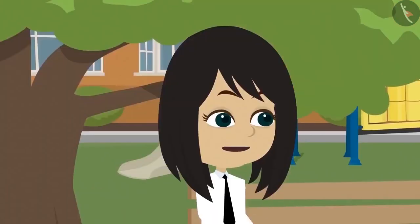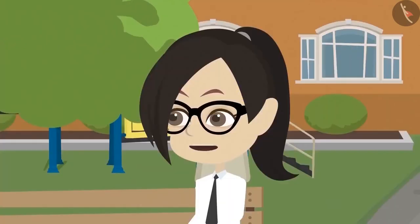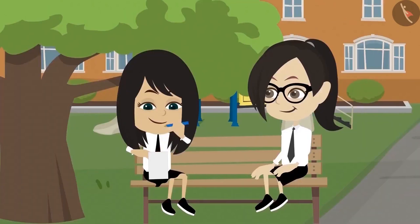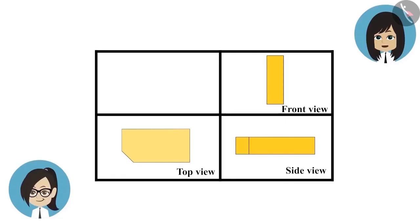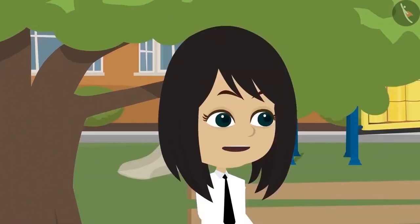Let's do one thing. You make three views of an object and show me. I will tell how the object looks from the left side. Okay, I will make the drawing of an object that looks different from the right and the left side. Look at this and tell me what it is. It looks like a rectangle from the front view. Now let's look at its side view. From the side view it looks like two rectangles kept side by side. As of now I cannot say what will be its left view. Now, show me its top view. This is a rectangle which is cut from the side.